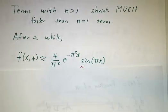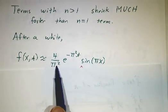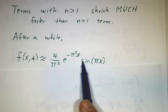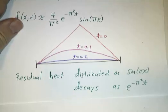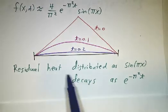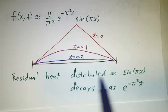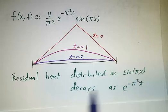So after a little while, you're left with something that looks basically like just the first term. It shrinks away. It shrinks away to zero. But after a while, the residual heat is distributed like a sine wave. And it decays like e to the minus pi squared t.